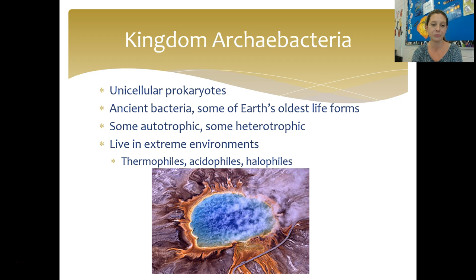Kingdom Eubacteria is what you think of when you think of bacteria — the common bacteria that makes us sick. Again, unicellular, prokaryotic organisms. Some are autotrophic, some are heterotrophic. They're found in soil, in water, and in the human body. Unlike archaebacteria, a key difference is that eubacteria require oxygen, so they can't survive in those extreme environments where oxygen is unavailable. This is because their cell walls are made of a substance called peptidoglycan, which we'll talk about later.